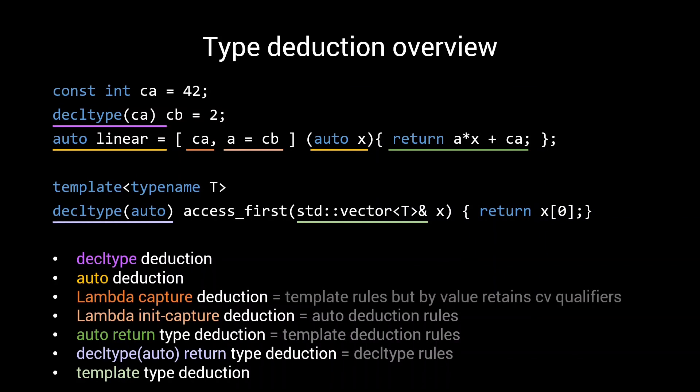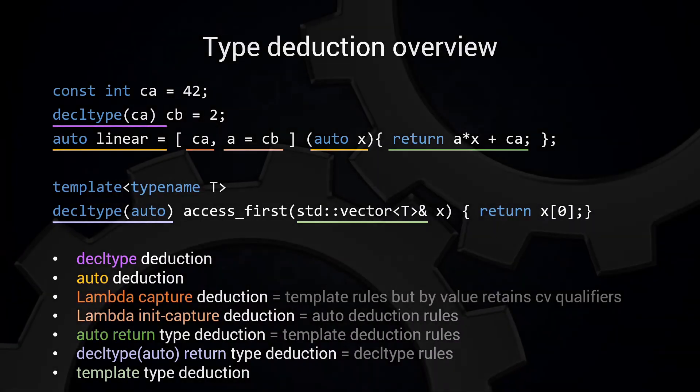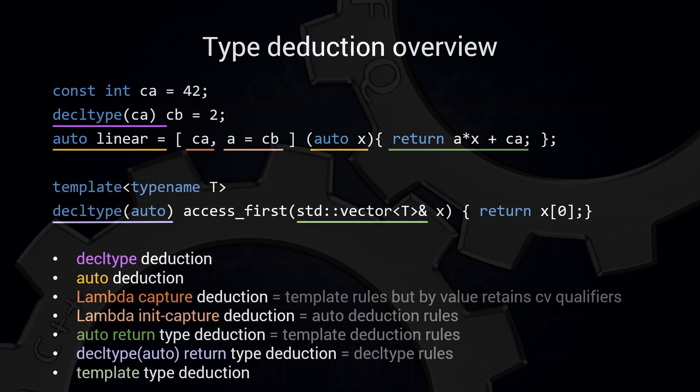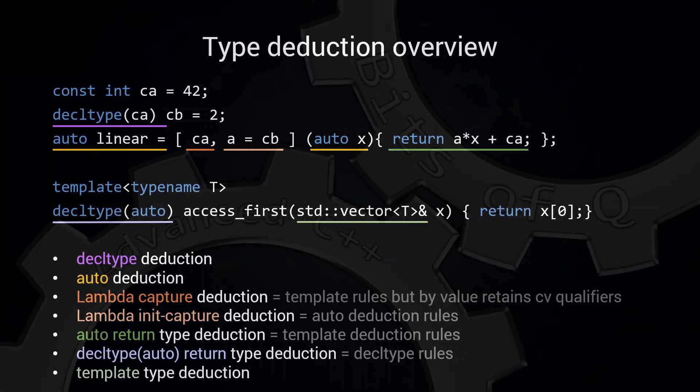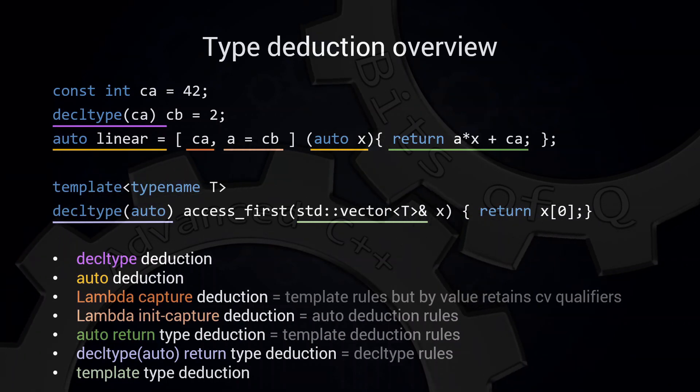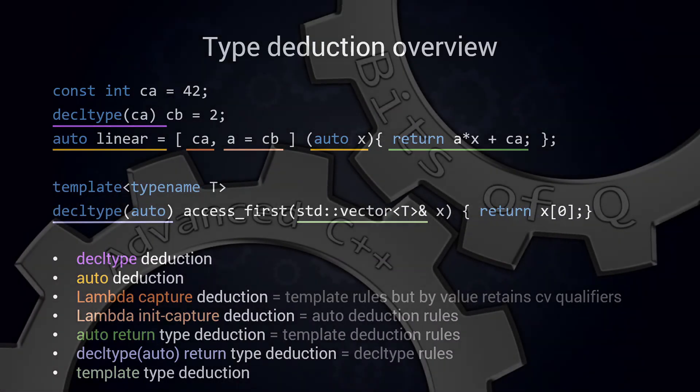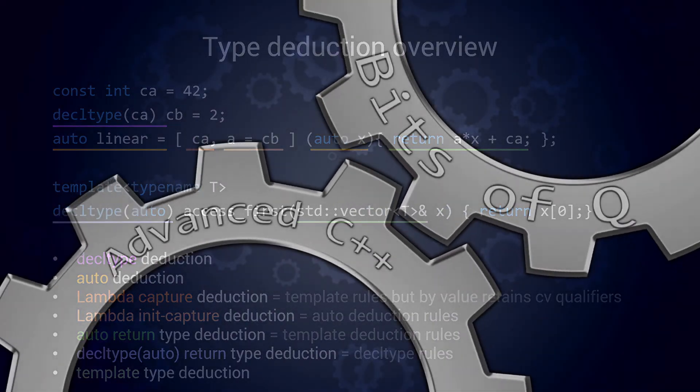And with this we conclude our tutorial on type deduction in C++. I thought it would be nice to leave you with this overview slide showing all the different forms of type deduction that we discussed, as well as the overlap between the different rule sets. I hope you enjoyed this mini-series and learned something new. If you did, make sure to leave a like and consider subscribing to the channel. If you have any questions or feedback, just leave a comment down below. See you next time.